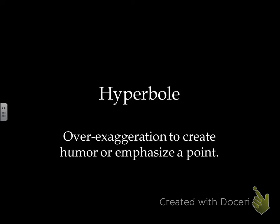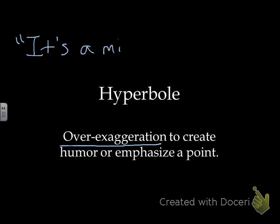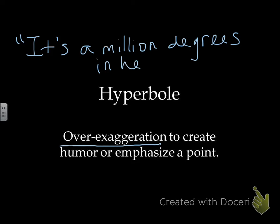Hyperbole is an over-exaggeration to create humor or emphasize a point. For example, 'it's a million degrees in here' — it's not literally a million degrees; you're exaggerating to make the point that it's really, really hot.